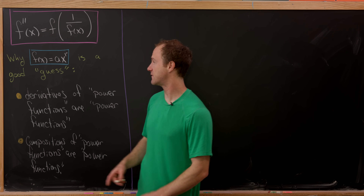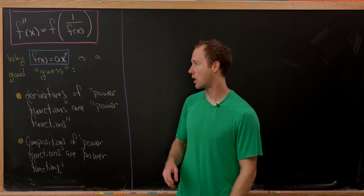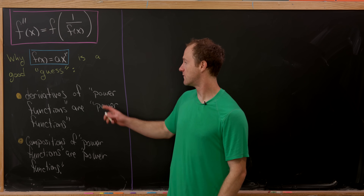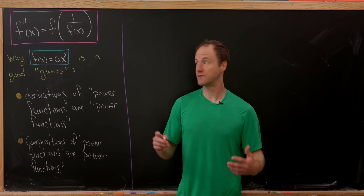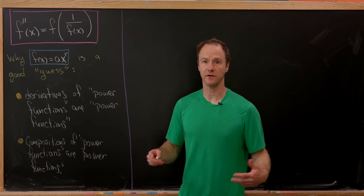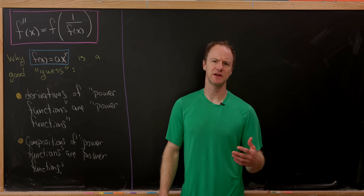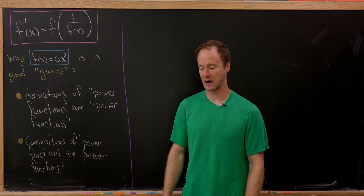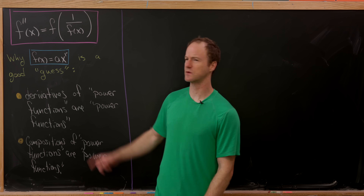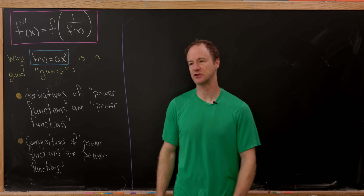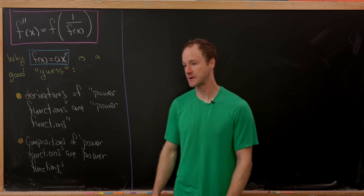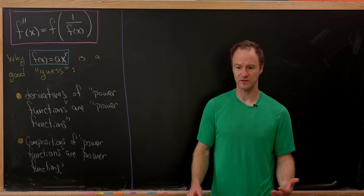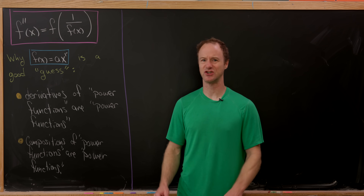Our guess will be f(x) equals a times x to the r. Why is that a good guess? There are two main reasons. First, derivatives of functions that look like this are other functions that look like this — derivatives of power functions are power functions. And compositions of power functions are also power functions. This derivative rule also holds for exponential functions, sines and cosines, but the composition rule does not hold for those — the composition of trigonometric functions with each other produces just a mess.